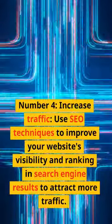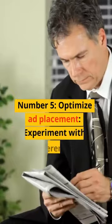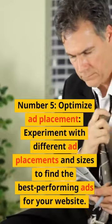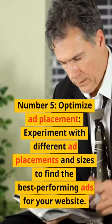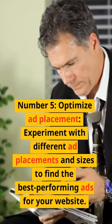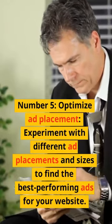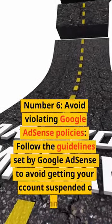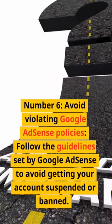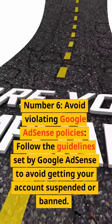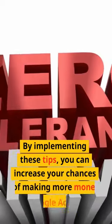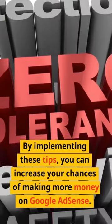Number five: optimize ad placement — experiment with different ad placements and sizes to find the best performing ads for your website. Number six: avoid violating Google AdSense policies — follow the guidelines set by Google AdSense to avoid getting your account suspended or banned. By implementing these tips, you can increase your chances of making more money on Google AdSense.